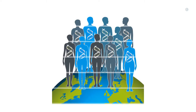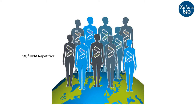Do you know that over two-thirds of the entire human genome comprises of repetitive regions? Among this, about 4 to 10% comprises of copy number variations, which significantly contributes to variation in the individuals of our population.